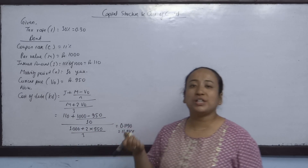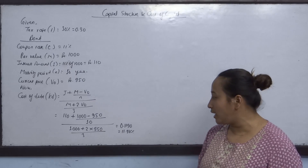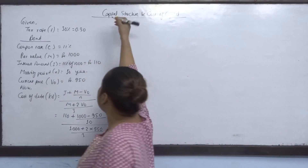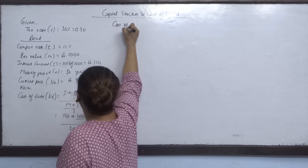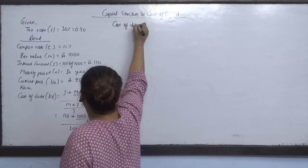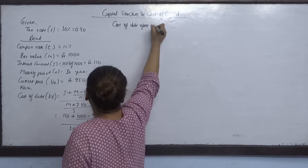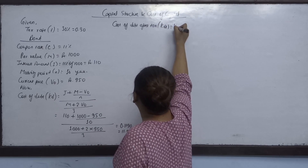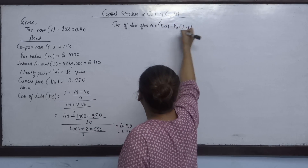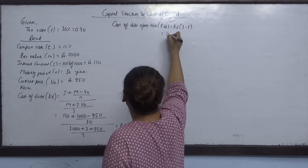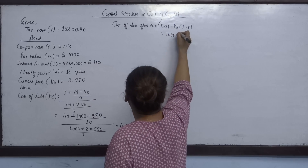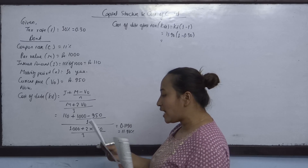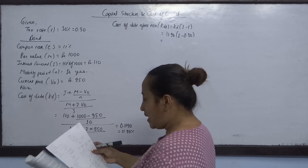Cost of debt after tax: with tax rate of 30%, after-tax cost of debt Kdt = 11.90% × (1 - 0.30) = 8.33%.